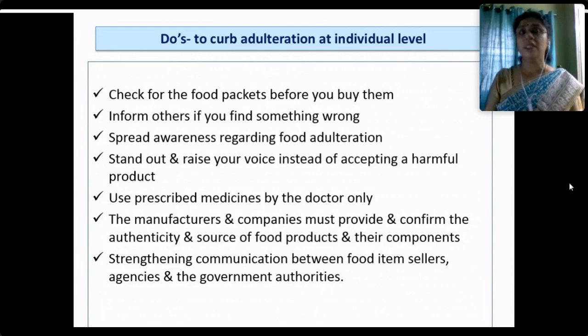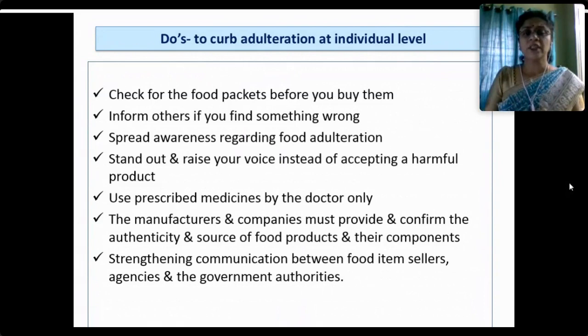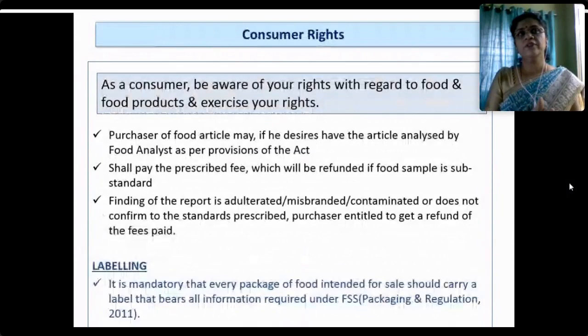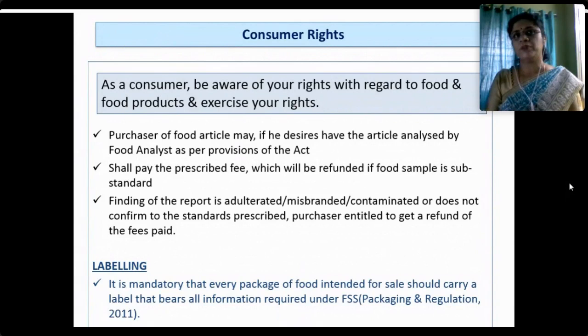Use prescribed medicines from doctors only — fraudsters have not even spared medicines and drugs, and everything has been adulterated. Manufacturers and companies must provide and confirm the authenticity and source of food products and their ingredients — this information should be available on labels. Strengthening communication between food item sellers, agencies and government authorities is needed, and consumers need to play a liaison role between the government, food producers and farmers. Every consumer must know and exercise their rights with regard to food and food products.